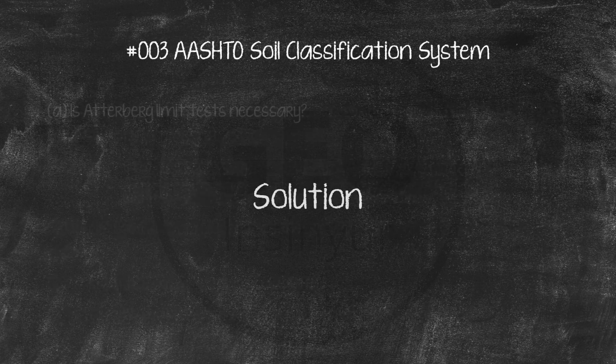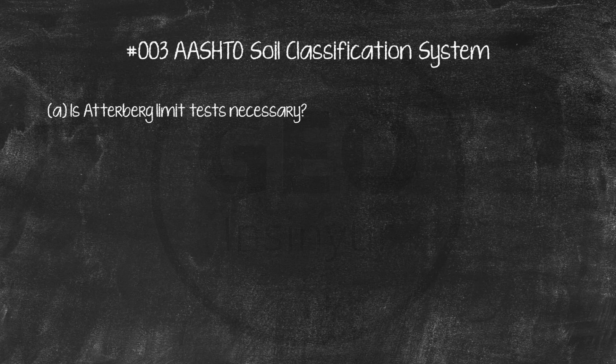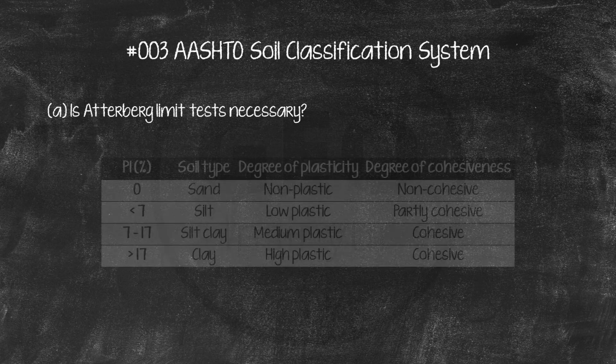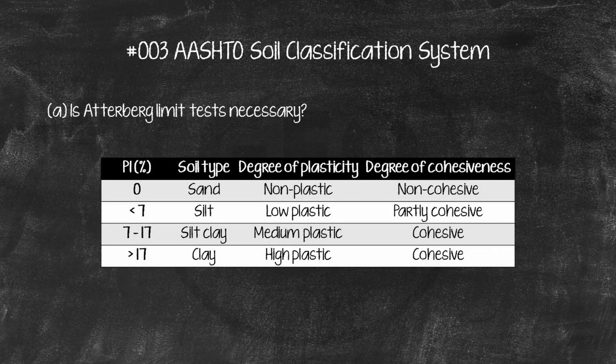Solution. A. Fine content in the sample is 4.1%. This means the majority of the soil particle is granular material or sand. Sand is non-plastic and the amount of fine content is too few, so it will crumble once the plastic limit test is conducted. So, Atterberg limit test is unnecessary.